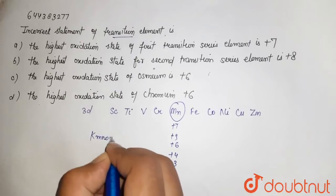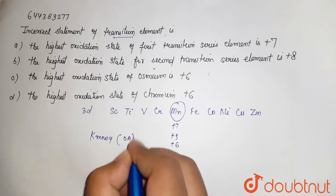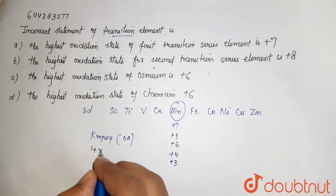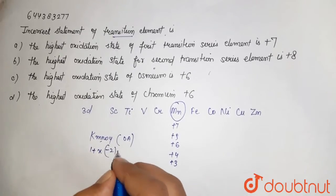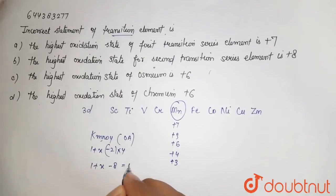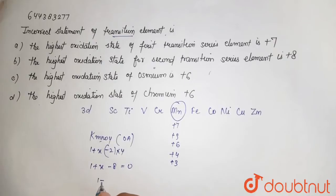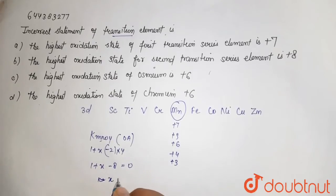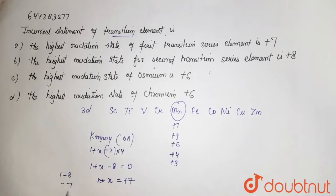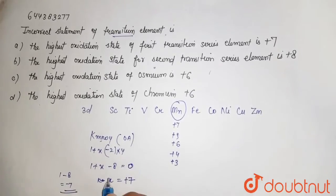You have seen KMnO4 - it is a good oxidizing agent. If I calculate this oxidation state, it is 1 + x + oxygen (-2) × 4. So 1 + x - 8, neutral molecule equals zero. It comes out to be x = +7.